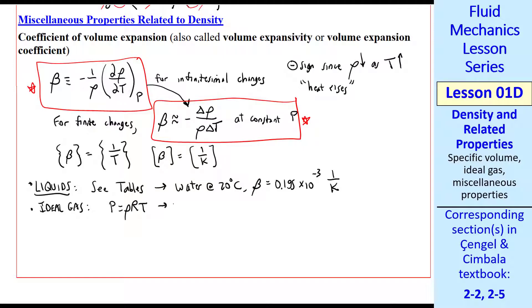By this fundamental definition, del rho del T at constant p will be negative p over RT squared, since there's a T in the denominator here. Therefore, from this definition, beta is negative 1 over rho times this. The negative signs cancel. I just rearrange things.